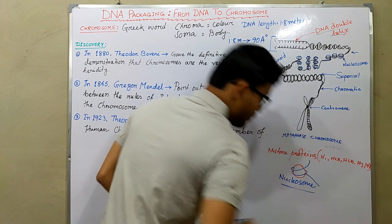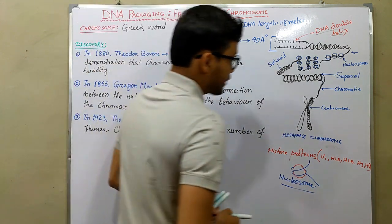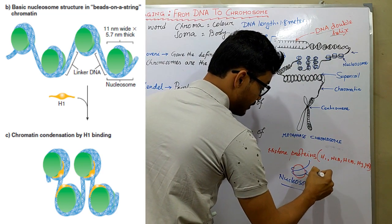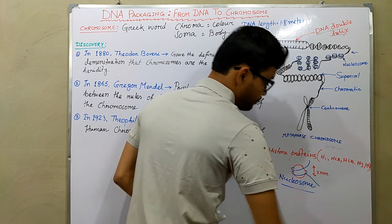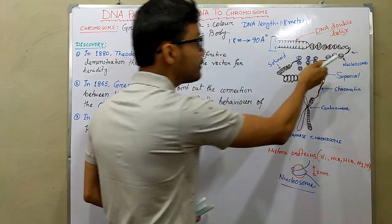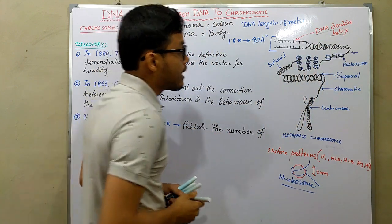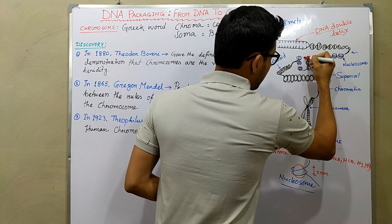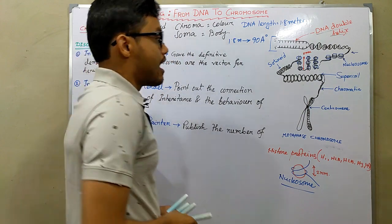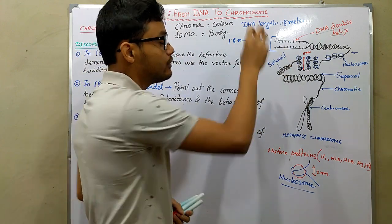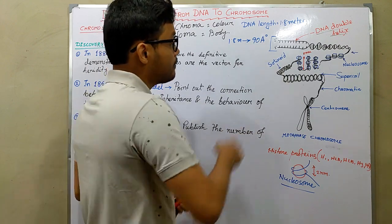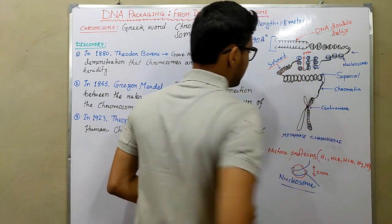Histone proteins consist of H1, H2A, H2B, H3, and H4. H2A, H2B, H3, and H4 make a core octamer around which DNA wraps itself and produces a nucleosome. By making a nucleosome, the DNA bends and produces a 2-nanometer fiber. Those tiny nucleosomes then wrap around each other and produce an 11-nanometer structure.